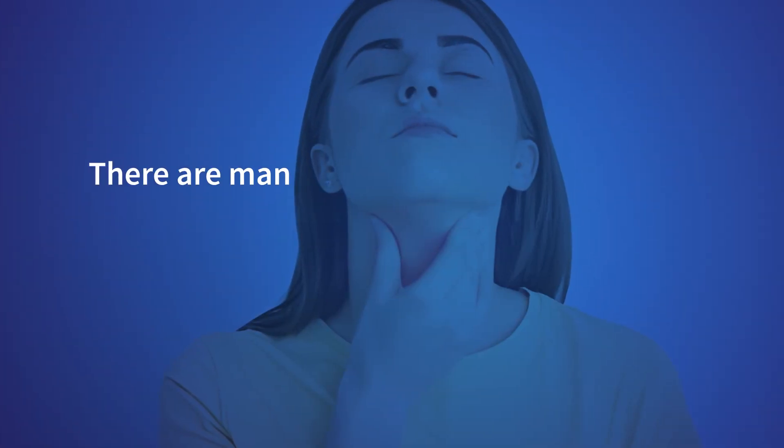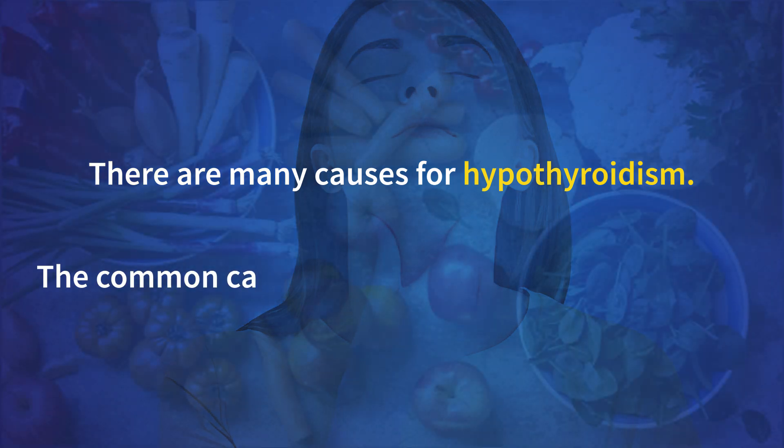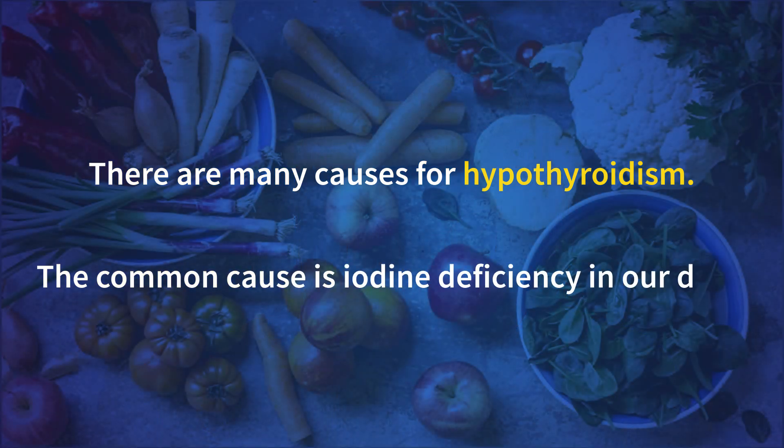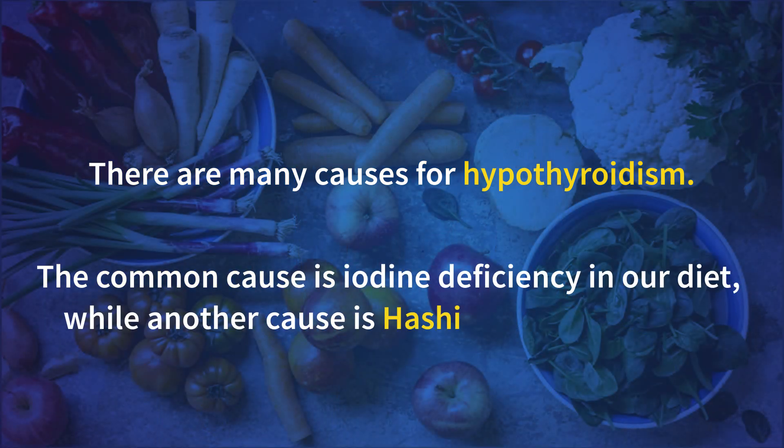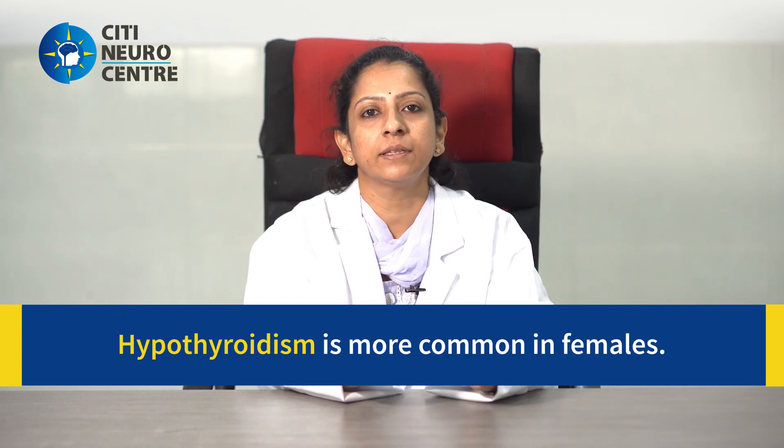Hypothyroidism has many causes. The most common cause is iodine deficiency in our diet. Other causes include a condition called Hashimoto's thyroiditis, where our body's own cells react against the thyroid cells. There is also temporary hypothyroidism following childbirth, and some forms of thyroiditis also cause hypothyroidism. This is again more common in females.